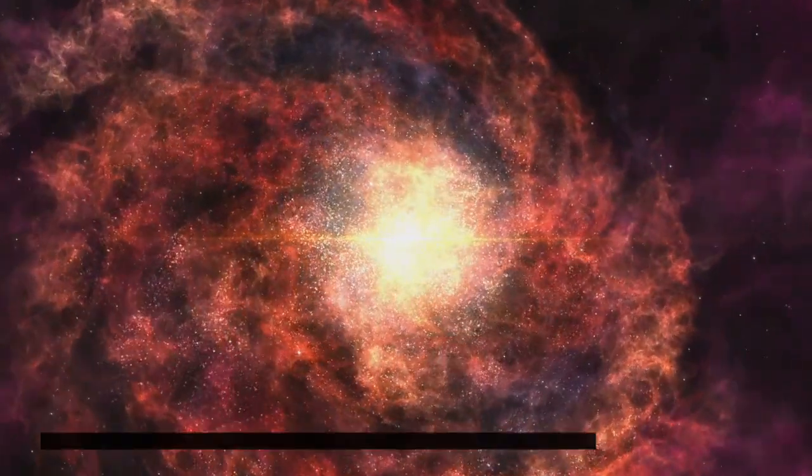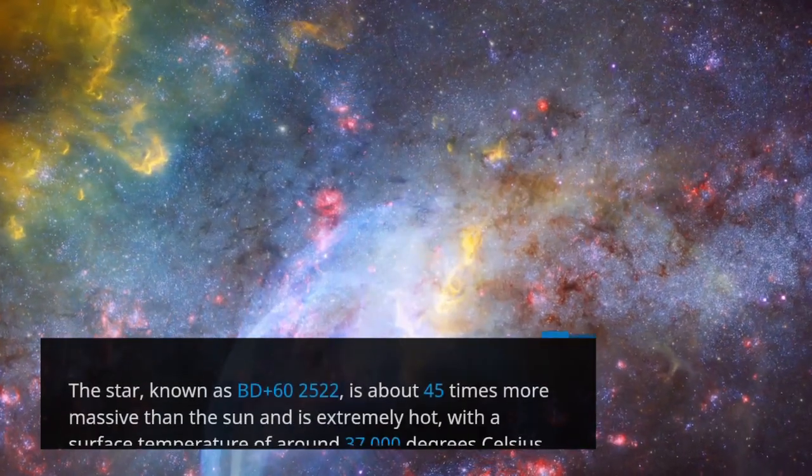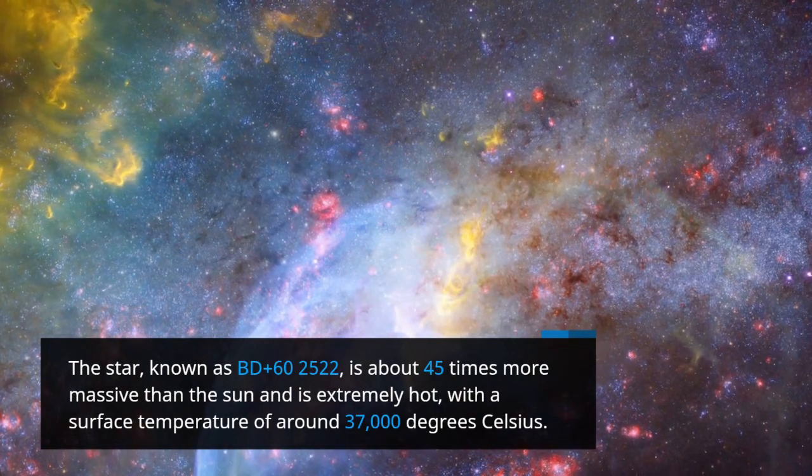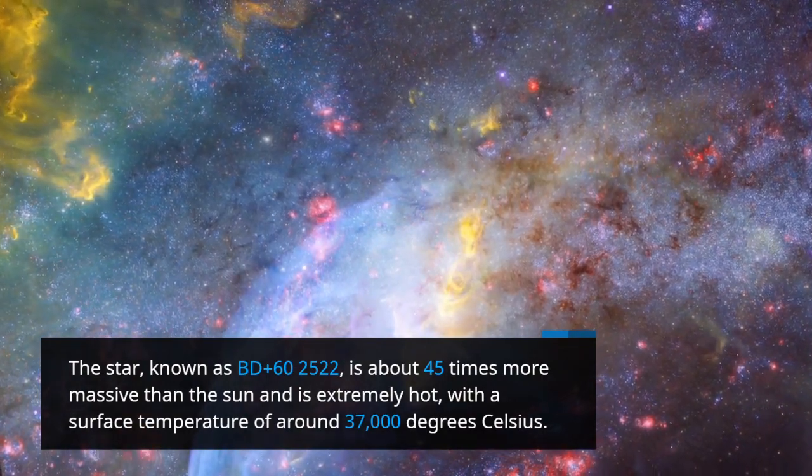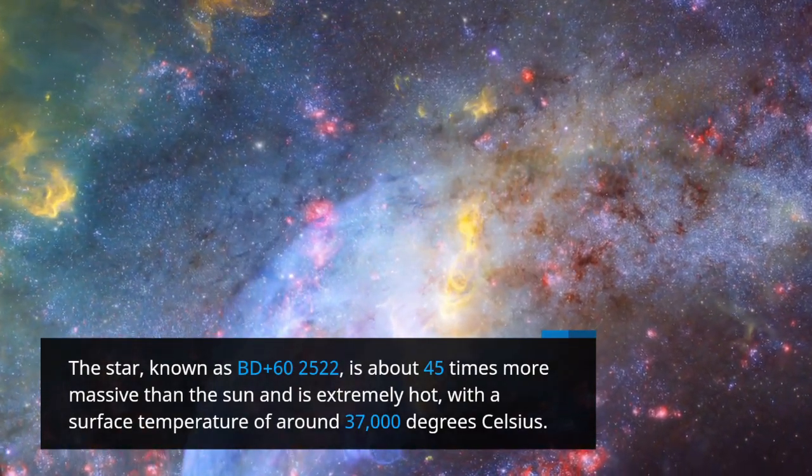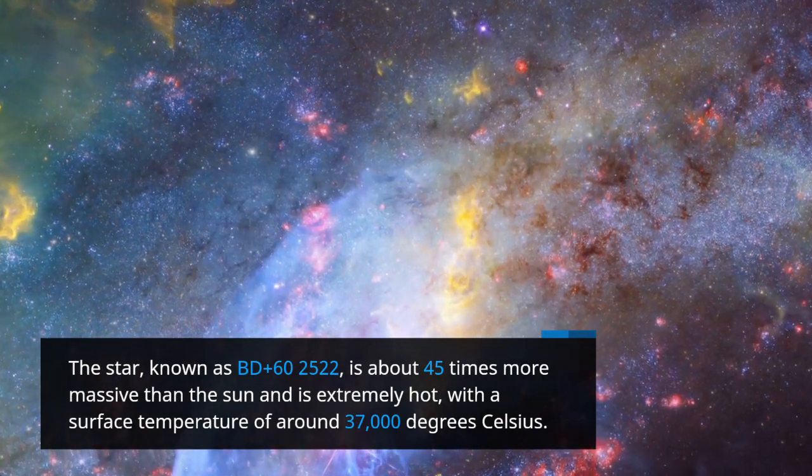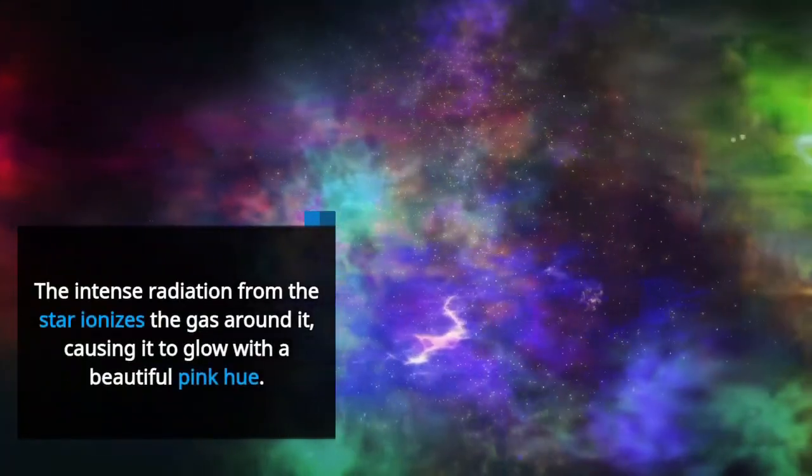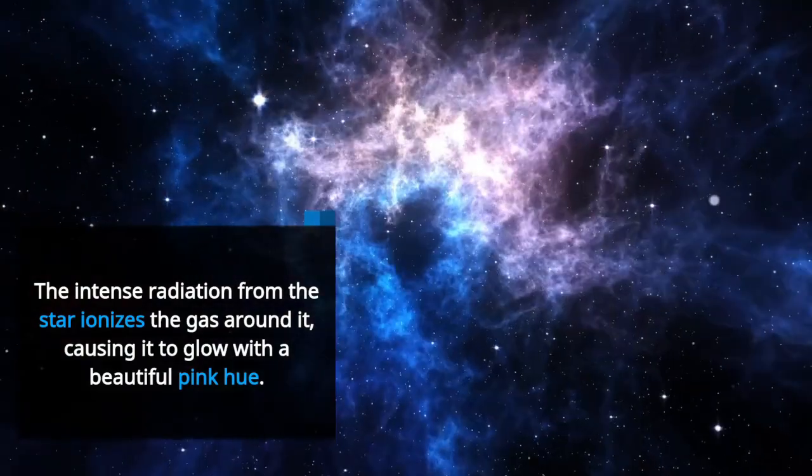The star, known as BD+62522, is about 45 times more massive than the sun and is extremely hot, with a surface temperature of around 37,000 degrees Celsius. The intense radiation from the star ionizes the gas around it, causing it to glow with a beautiful pink hue.